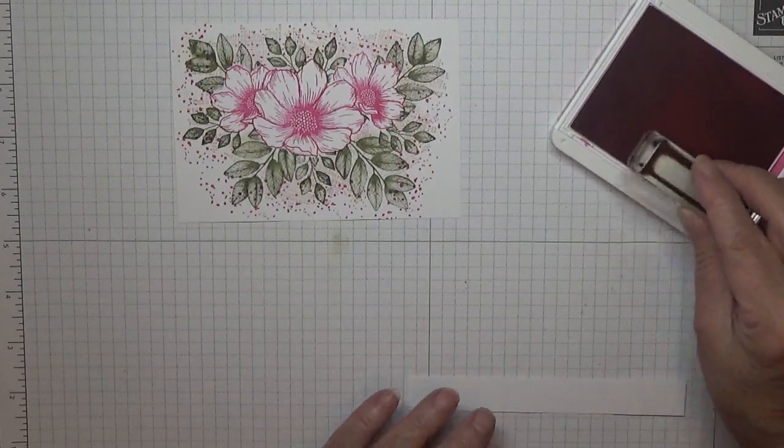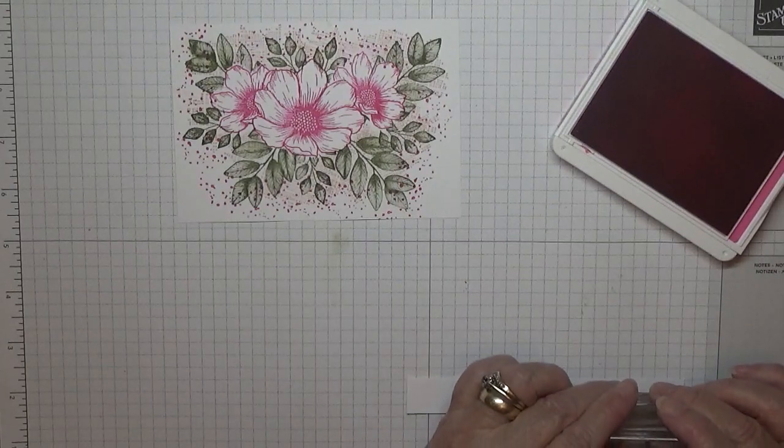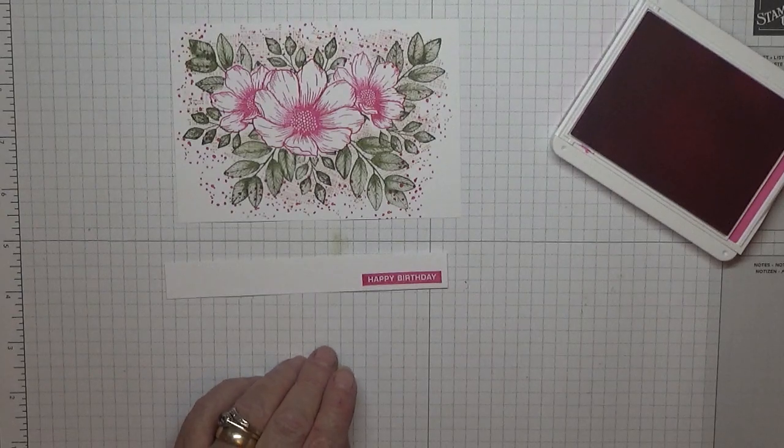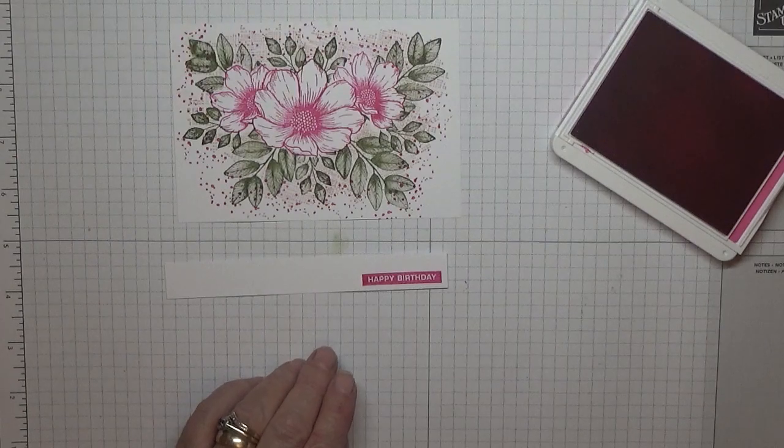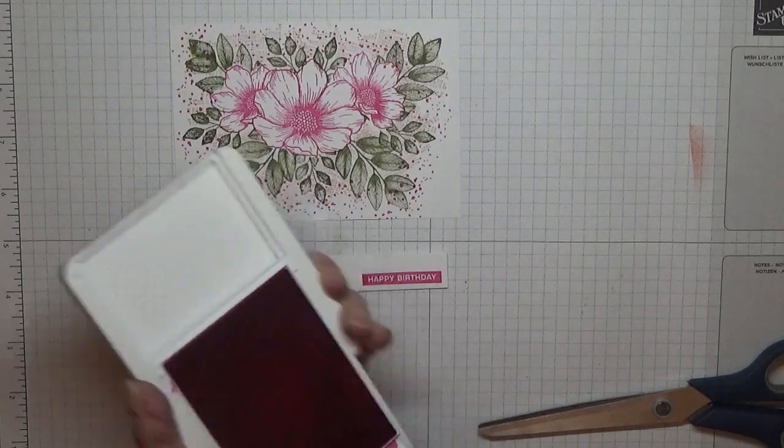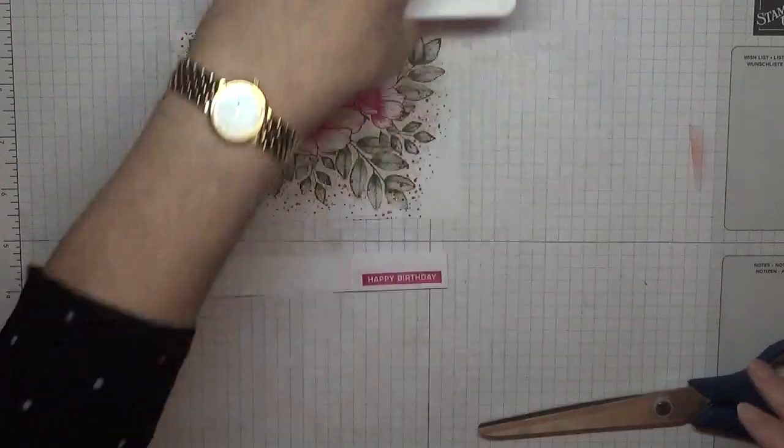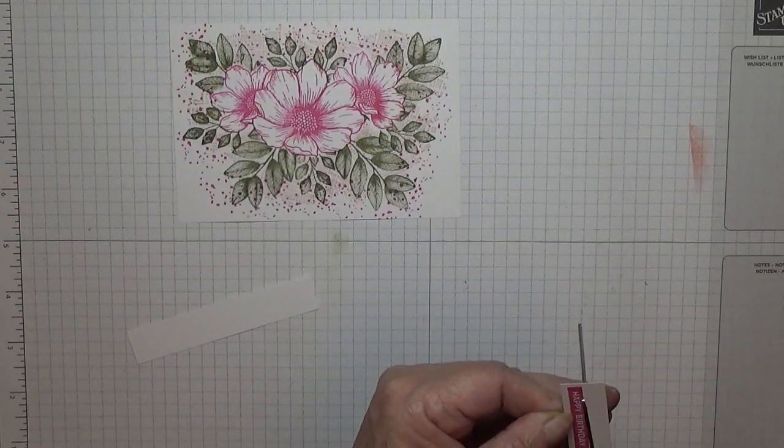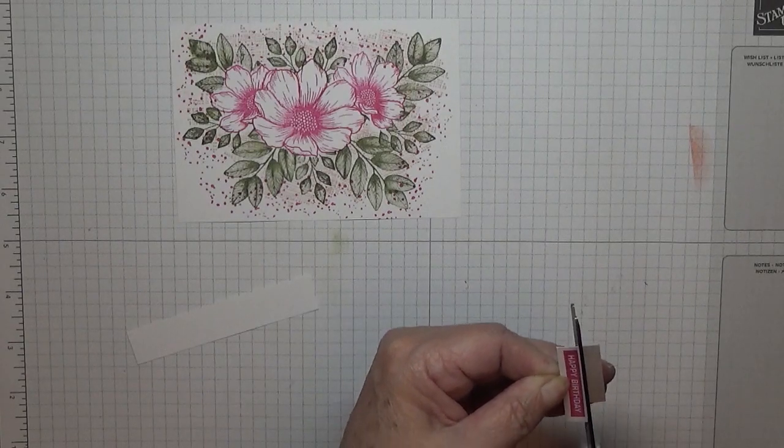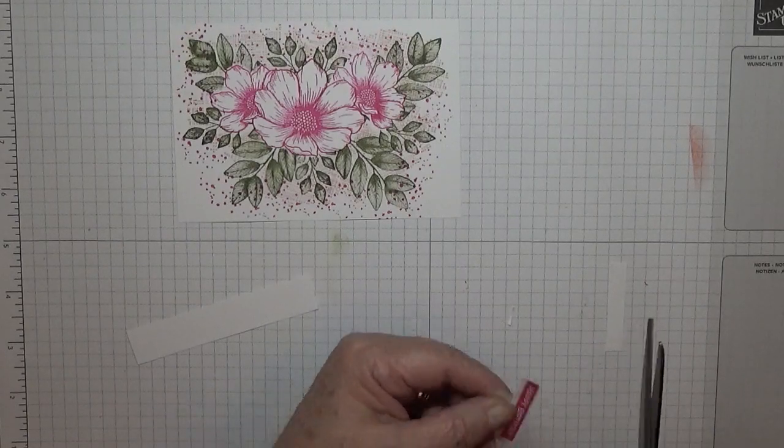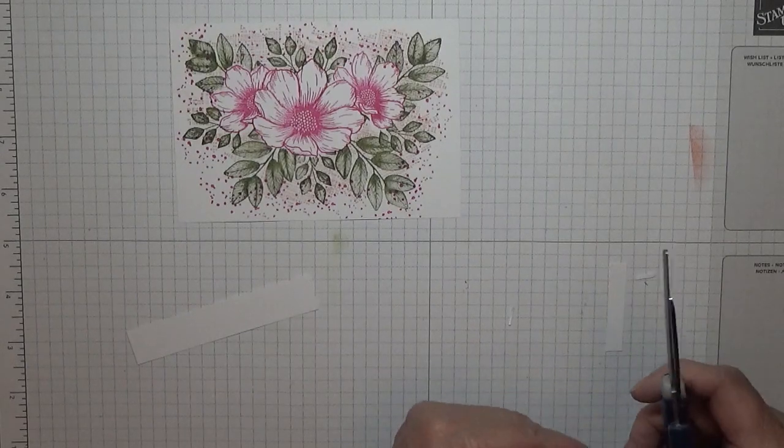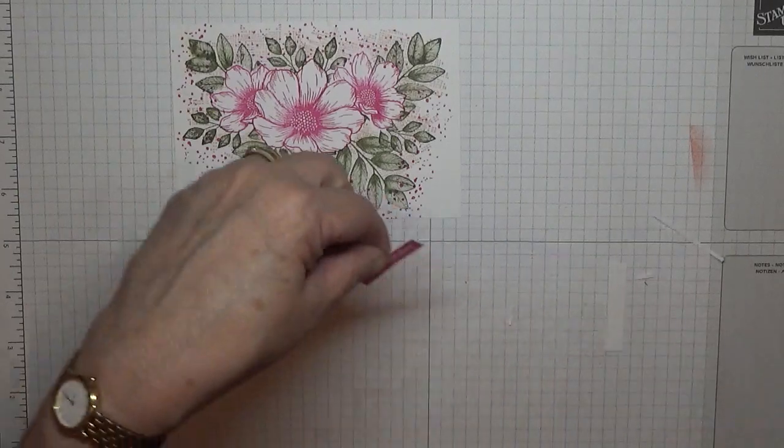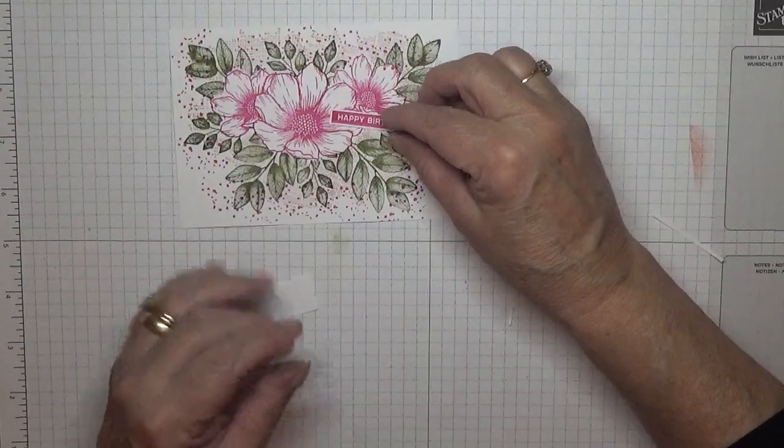And now for the sentiment. With Magenta Madness we're just going to stamp my Happy Birthday, and then we'll cut that out. Try not to put my fingers too close to the ink. What I'm doing is just cutting this down so we've just got a little tiny white border, and that must sit on there like that.